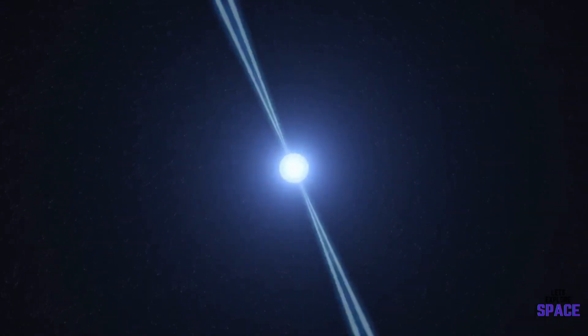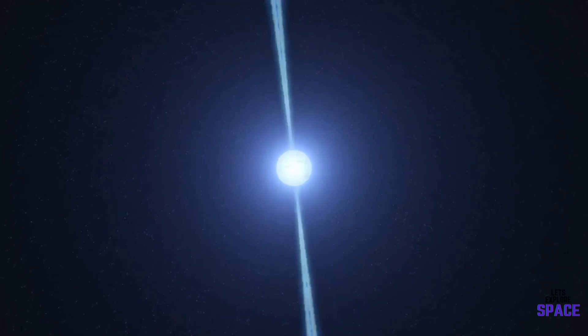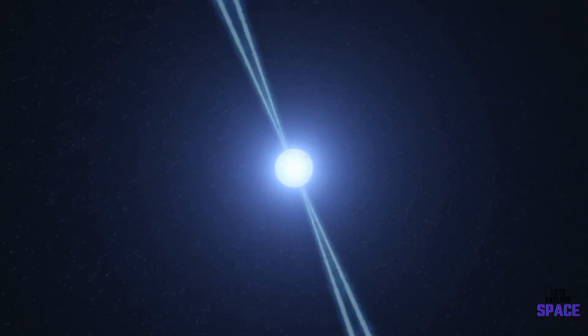The power from the supernova that birthed it gives the star an extremely quick rotation, causing it to spin several times in a second. Neutron stars can spin as fast as 43,000 times per minute, gradually slowing over time.